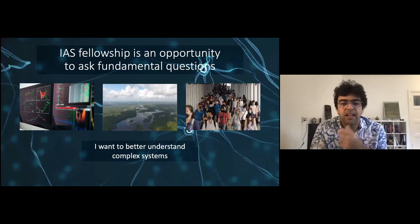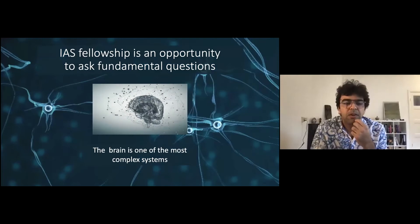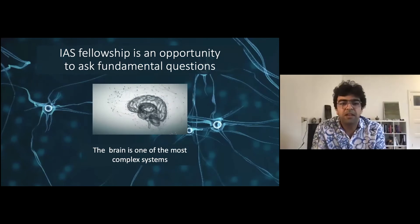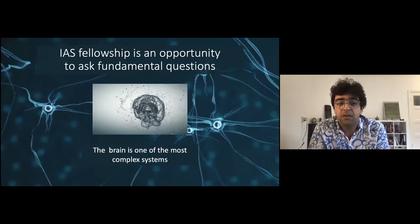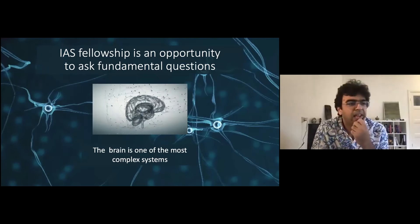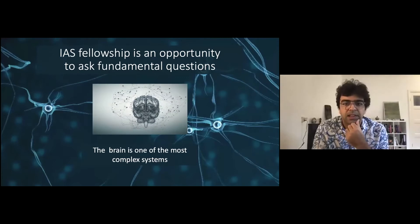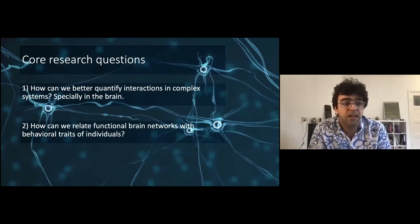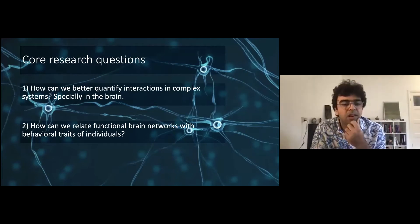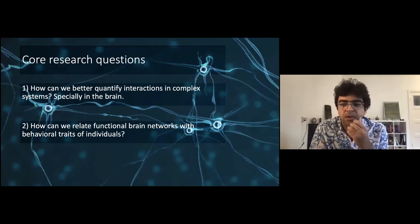In particular, I would like to zoom in on the brain, which is considered by many to be the most complex system. That's why combining this IAS fellowship with the neuroscience connection would be really nice for this project. We know the brain is a complex system and there are many ways to model it, but I will focus today on brain networks. I'd like to address two questions that seem unconnected but are the building blocks of this talk.